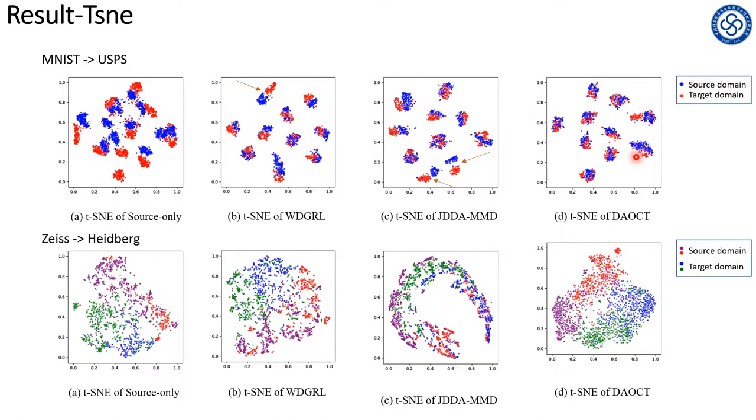Figure D is the result of our method. It can be clearly observed that our method got the best performance in reducing the domain discrepancy while keeping the distance between categories.